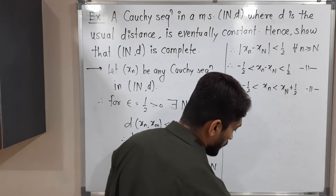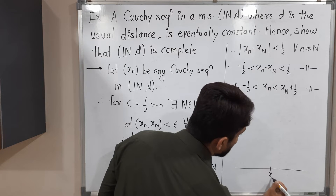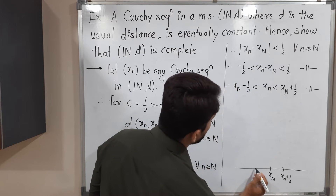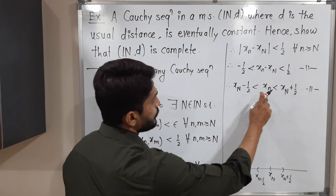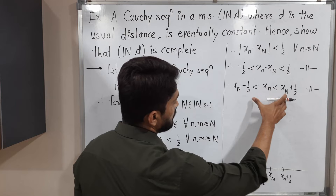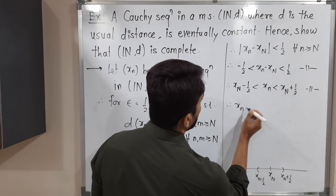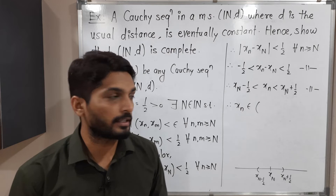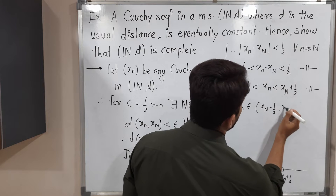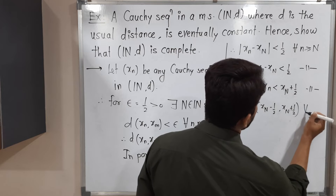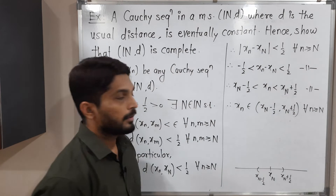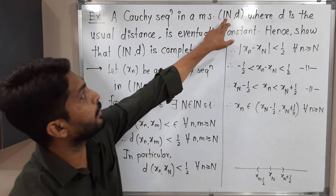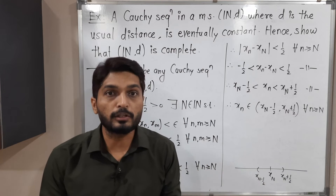Therefore, Xn belongs to the open interval (X capital N minus half, X capital N plus half), for all n greater than or equal to capital N. But the important thing is Xn is a natural number, and X capital N is also a natural number since we are talking about this metric space N, D — all Xn are natural numbers.